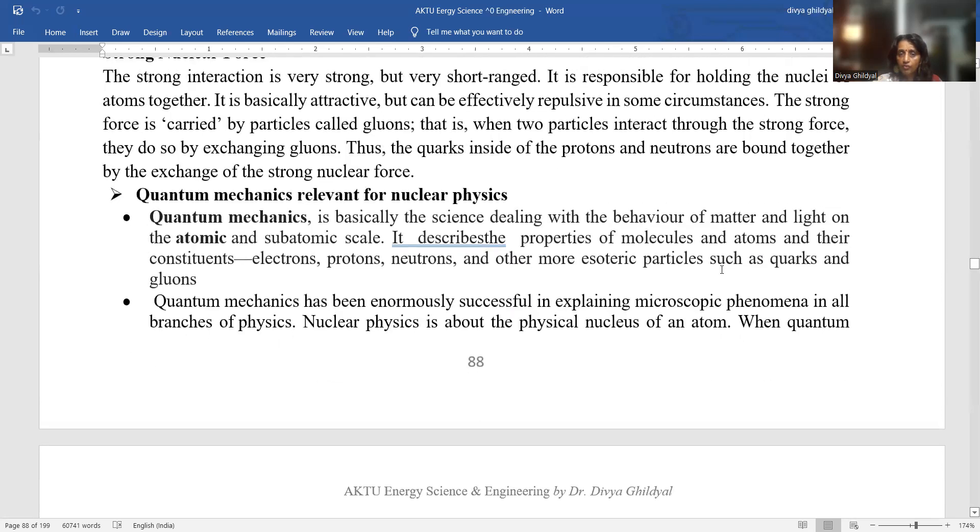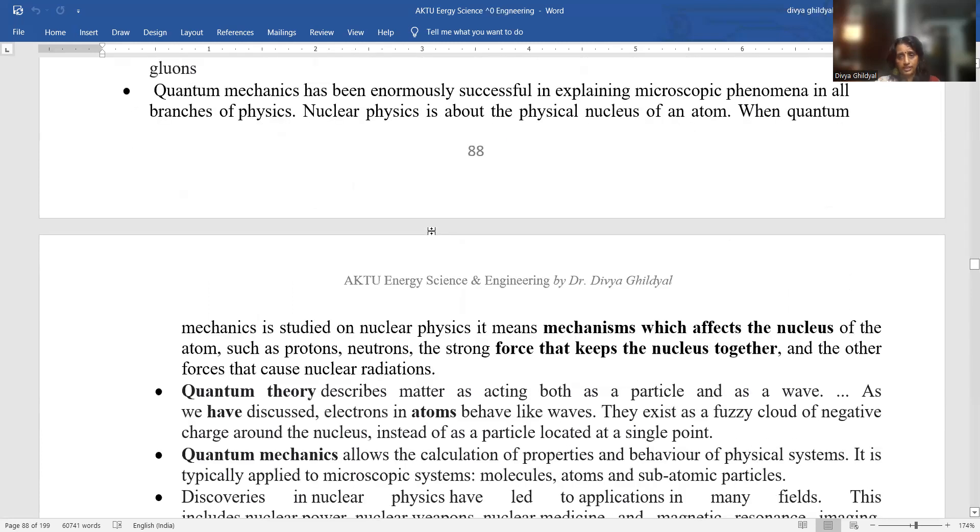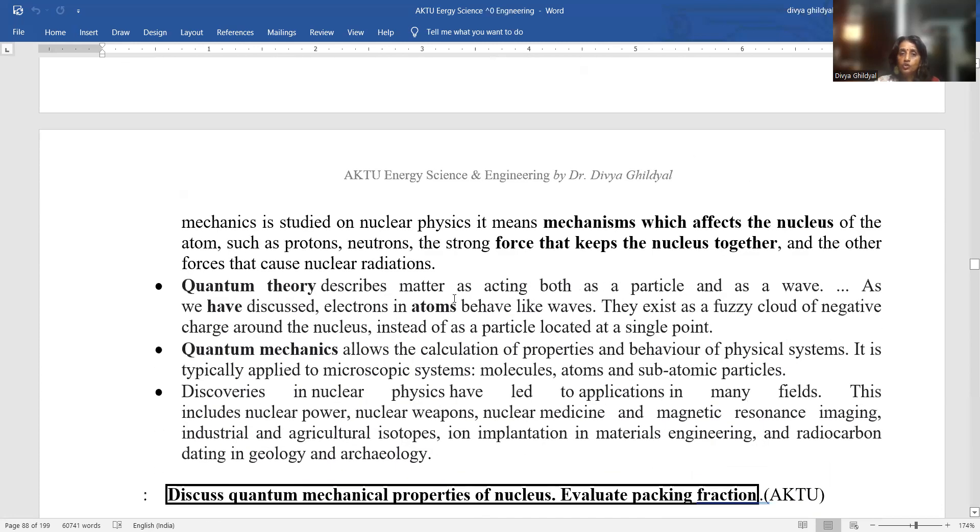Quantum mechanics which is relevant for nuclear physics is that it is basically the science dealing with the behavior of matter and light on the atomic and subatomic scale. Quantum mechanics explains microscopic phenomena in all branches of physics. Mechanisms which are affecting the nucleus, forces that are keeping the nucleus together. Quantum theory is also describing matter. You remember matter wave, properties of matter wave, both as particle and as a wave nature. The de Broglie equation which is combining both of them.